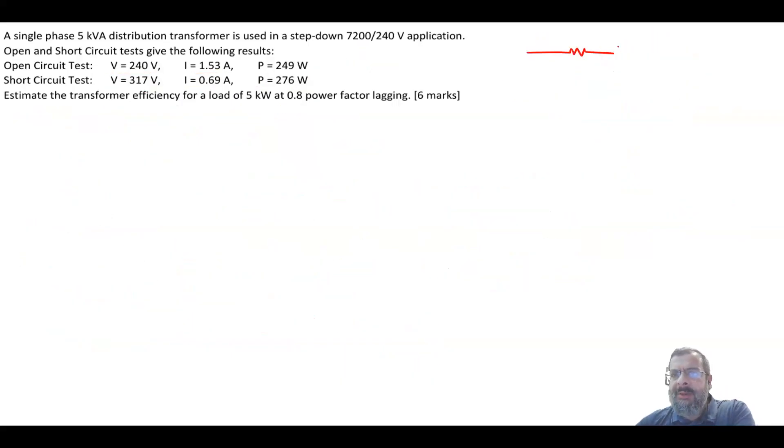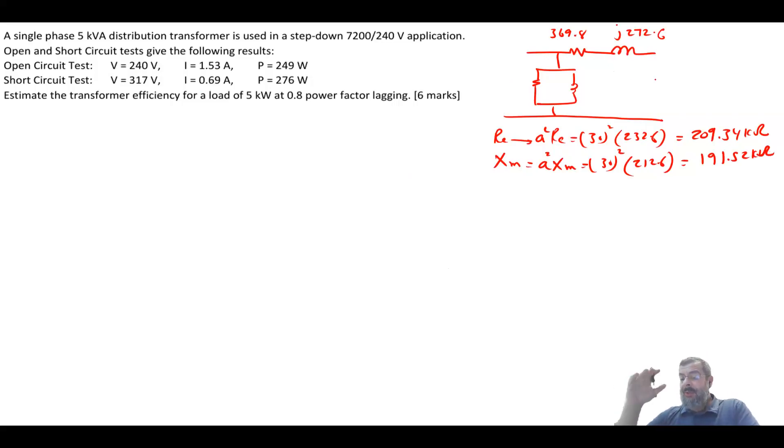So basically my model now would be as such. This is your 369.8 plus J272.6. Now your RC will be A square RC, which is 30 square times 232.6, and this will give me 209.34 kilo ohm. Your XM will be A square XM, which is 30 square times 212.6, and this will give me 191.52 kilo ohm. So these are basically now your RC and your XM. And the voltage here now, because we are referring everything to the high voltage, so this is your Vp. This is your Ip. Now the voltage here is 7200, and we use this as angle 0 as our reference.